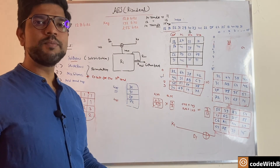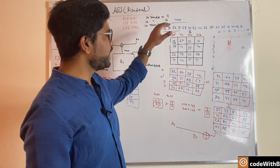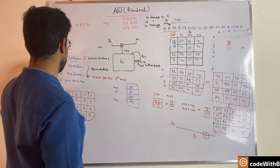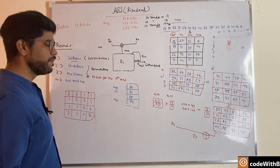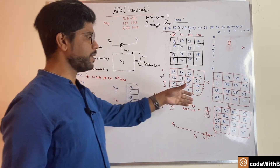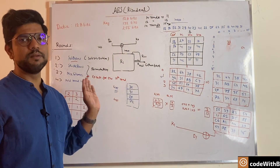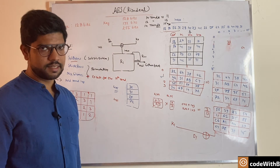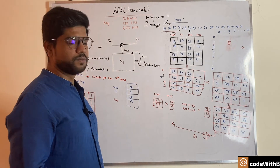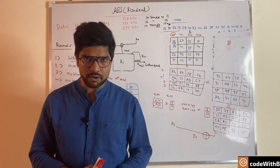At the time of decryption the same steps are followed and the same keys are applied. The difference is in individual steps: for example, in shift rows the shifting happens to the left during encryption, but during decryption it will be to the right. More or less the algorithm remains the same. This is all about the rounds of the AES algorithm.